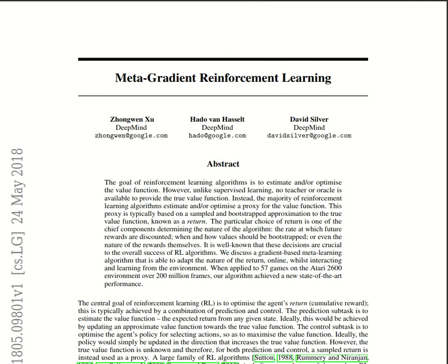Hi, today I want to talk about the paper 'Meta-Gradient Reinforcement Learning' by John Wenxiu, Hadovan Nassad, and David Silver from DeepMind. On a higher level, this paper is about meta-learning, or rather, in a reinforcement learning algorithm, how to learn the hyperparameters of such an algorithm using gradient descent.